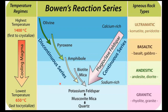Looking at Bowen's Reaction Series as it relates to igneous rocks: olivine crystallizes first and at the highest temperature out of a magma, and quartz crystallizes last. We also see the separation of different igneous rock types: ultramafic, basaltic or mafic, intermediate (acidic), and granitic — using the term felsic. If a rock is very high in quartz content, we would say it's granitic or felsic.